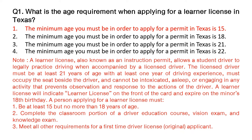A person applying for a learner license must: number one, be at least 15 but no more than 18 years of age; number two, complete the classroom portion of a driver education course, vision exam, and knowledge exam; number three, meet all other requirements for a first-time driver license original applicant.